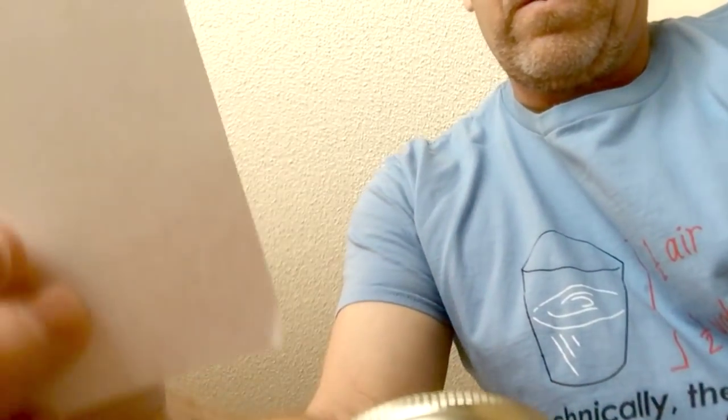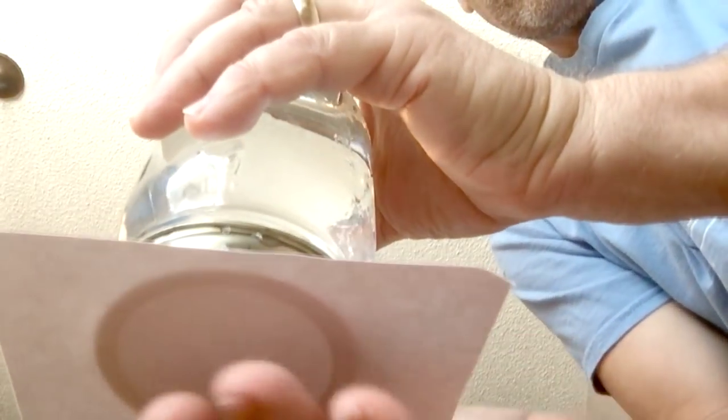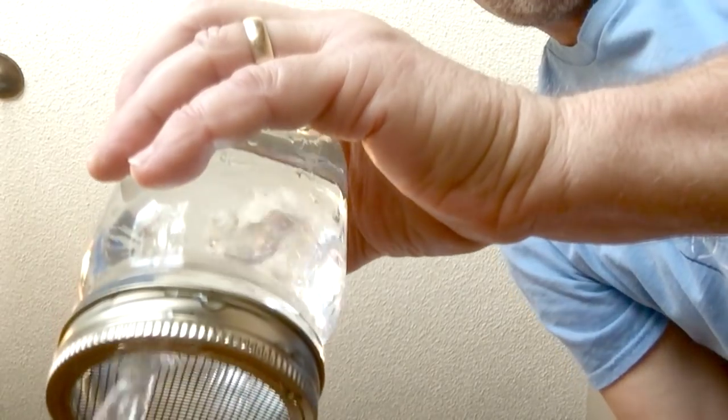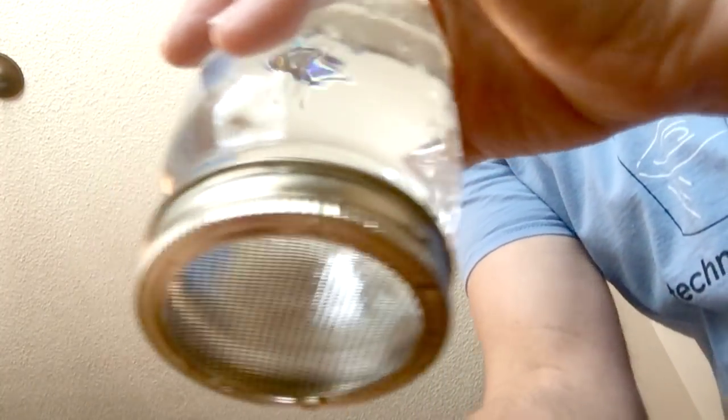The screen's going to hold the water in. So we take our index card, put it on top, flip it over, and then to the side very quickly, we're going to pull that index card out, and a little bit of water might come out like that, but overall, it's all going to stay.